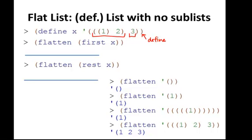If we look at what flatten of the first of x returns, it returns just 1, 2. And flatten the rest of x should return just the list 3.